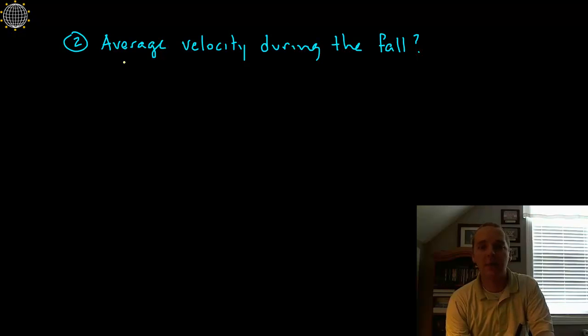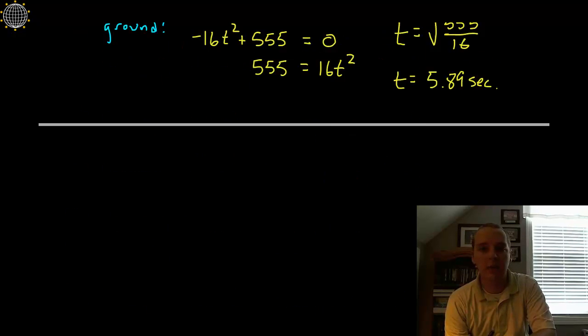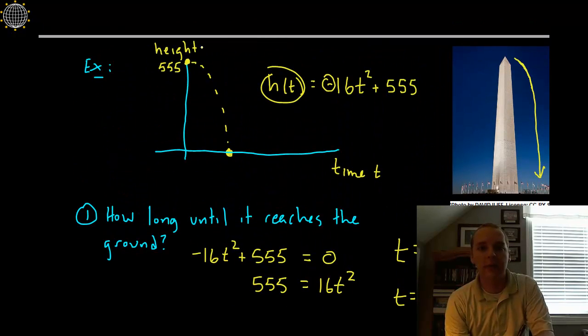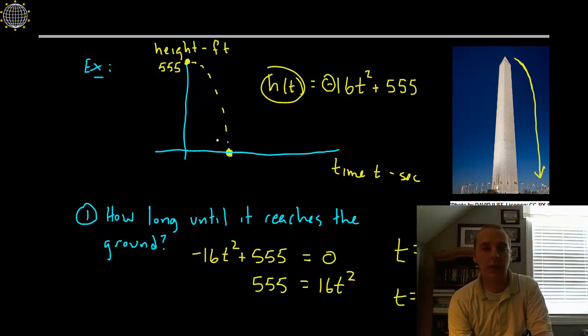This deals with average rate of change. What was the average velocity during the fall? Now velocity we know would be feet per second, but that's exactly what our slope would give us. If this is the height in feet and the time in seconds, then rise over run would be feet per second. That would be your average velocity.